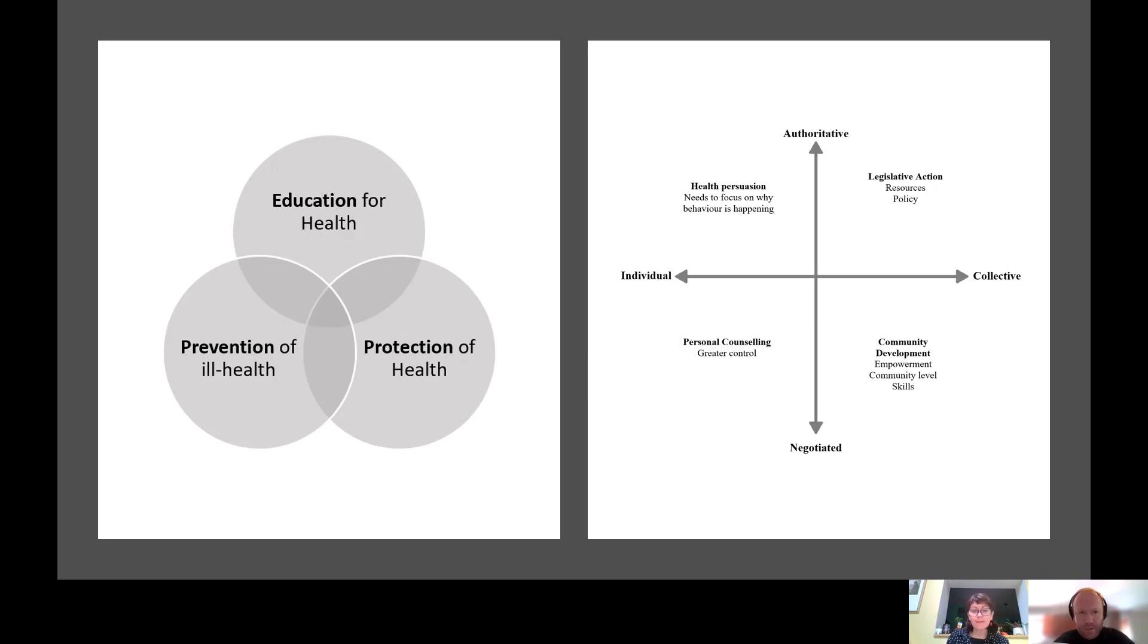So moving to Beattie now, Beattie's model came five or six years after Tannehill, with the citation being 1991. It looks very different visually, a very different approach to thinking about health promotion. In those five or six years between Tannehill's model and Beattie's model, much had been discussed, lots of policy had been developed regarding health promotion, both nationally and internationally. You see a more sophisticated viewpoint of health promotion.